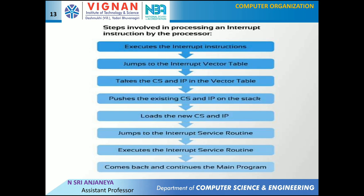What are the steps involved in processing an interrupt instruction by the processor? First, execute the interrupt instruction to generate the interrupt. Next, jump to the interrupt vector table, which contains the starting addresses of interrupt service routines, to obtain the ISR starting address. Then take the CS and IP values from the vector table and push the existing CS and IP of the currently running main program onto the stack. Load the new CS and IP values and jump to the interrupt service routine. Execute the ISR, then return control to the main program.